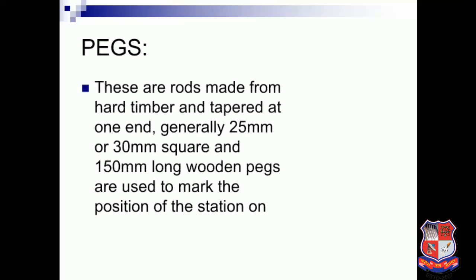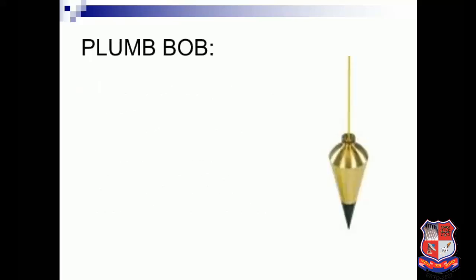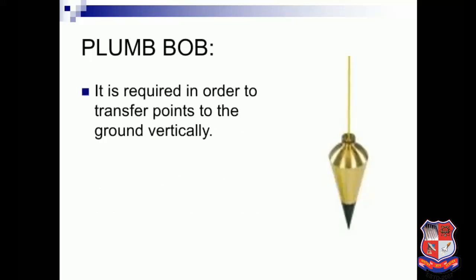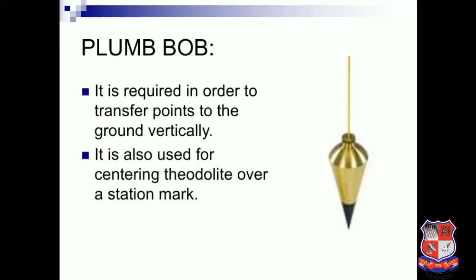Pegs are used to fix stations. These are rods made from hard timber, generally 25 mm or 30 mm square and 150 mm long wooden pieces, used to mark the position of a station. A plumb bob is required to transfer points to the ground vertically, and is generally used for centering a theodolite over a station mark.